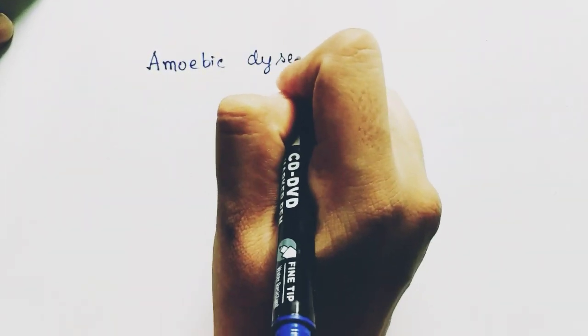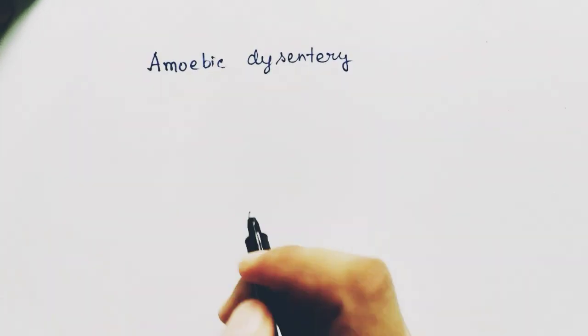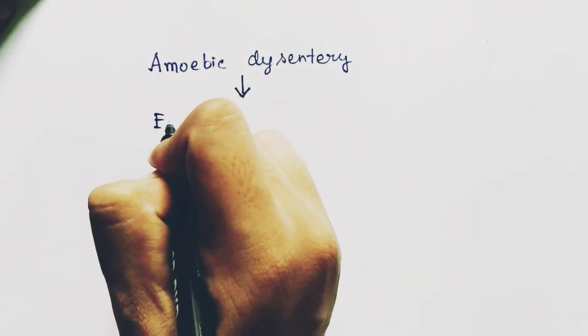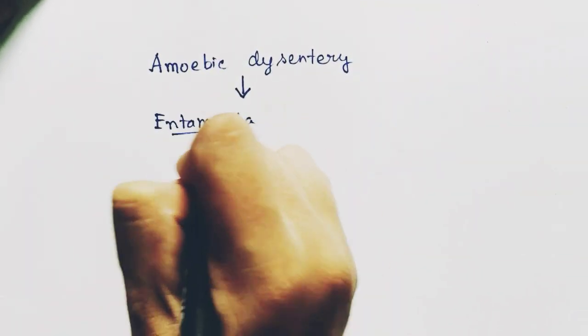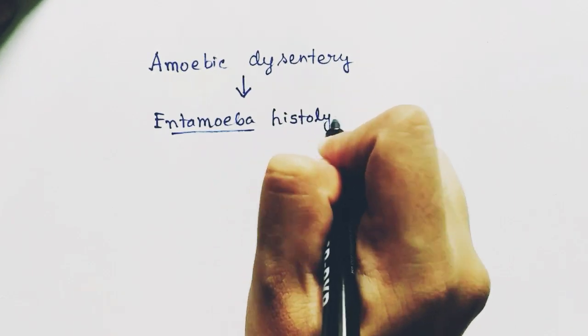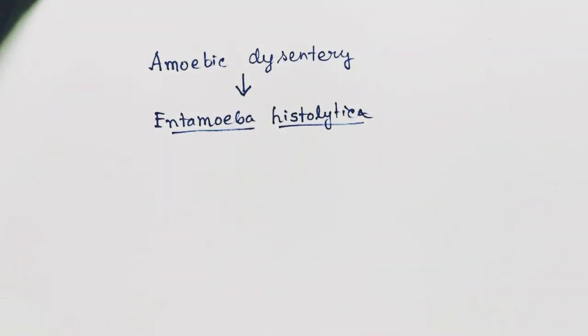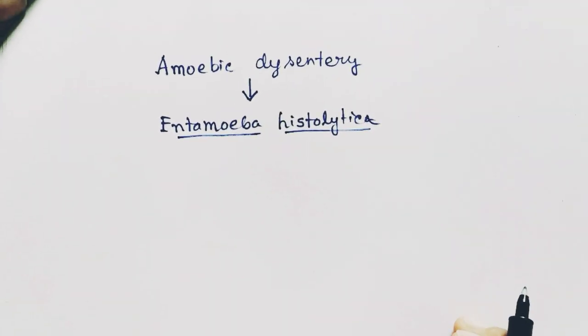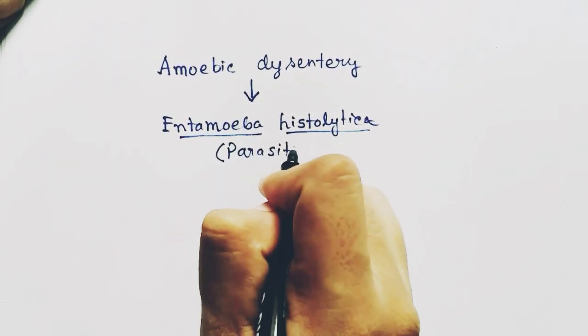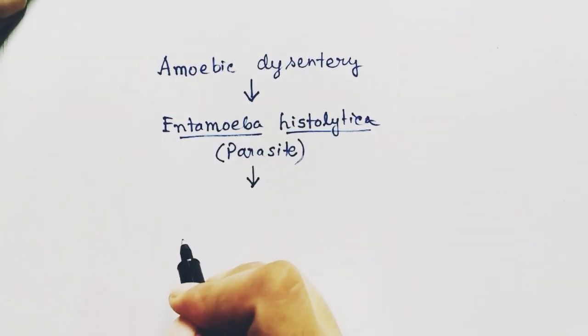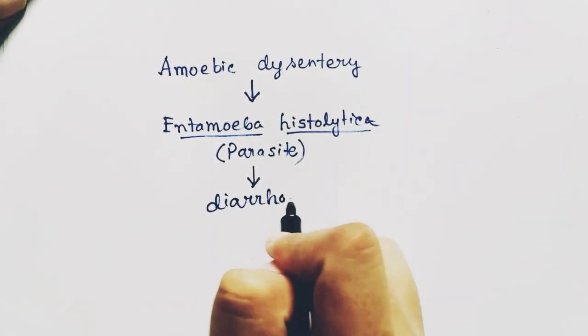In this video we are going to talk about amoebic dysentery, which is a disease caused by Entamoeba histolytica, a parasite that causes diarrhea in the human body. This diarrhea caused by Entamoeba histolytica is called amoebic dysentery.